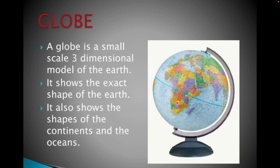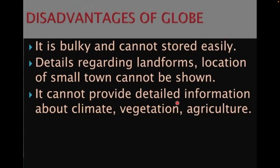The globe structure was created by Martin Behaim. It is a 3D dimensional model in which they tried to describe all the continents and oceans with very particular features of the entire earth. When it is a globe, there will obviously be some disadvantages.